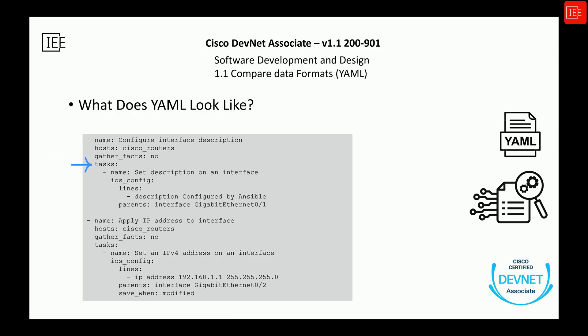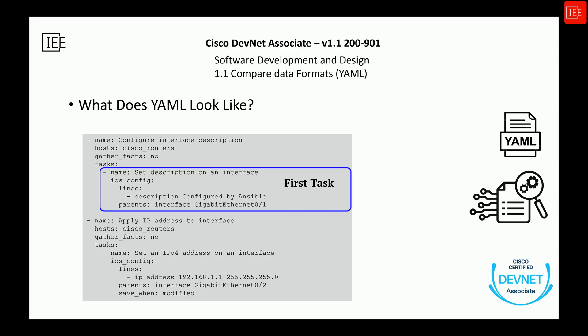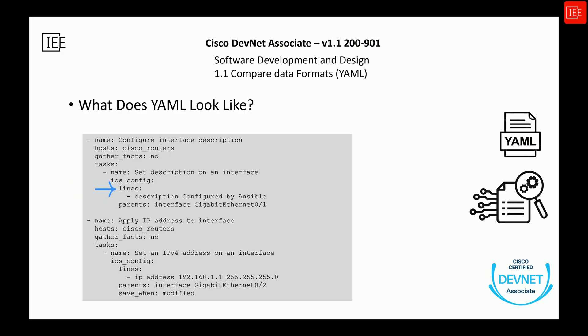The tasks section starts a list of tasks for Ansible to run. Each task will be defined underneath it. The dash marks the first task as a list item. This task is going to configure the description on a router interface. The ios_config key means we are using Ansible's ios_config module, which is specifically designed to send configuration commands to Cisco IOS devices.